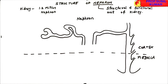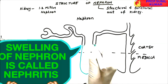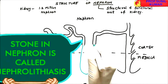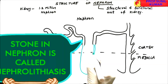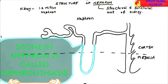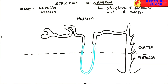From the end of the PCT, we draw a very thin tube called the loop of Henle. The loop of Henle is very important in maintaining the concentration of the urine. The concentration of the urine is regulated by the length of the loop of Henle — the longer the loop of Henle, the more concentrated the urine.